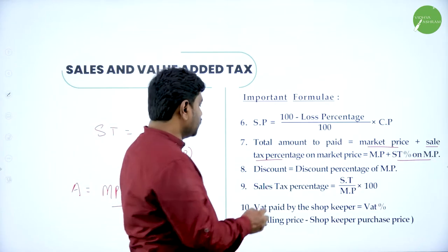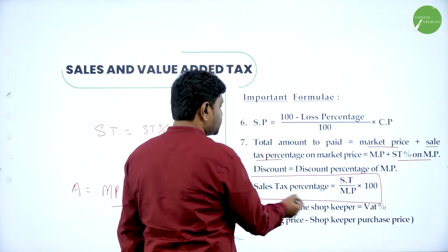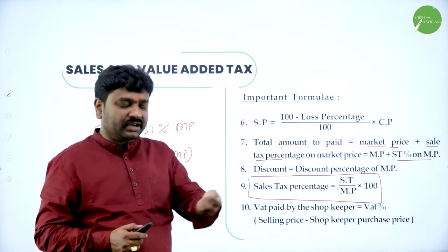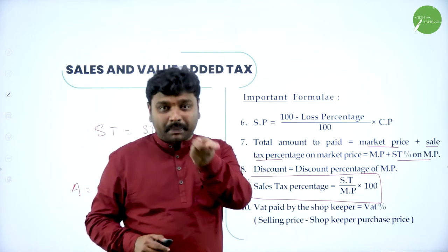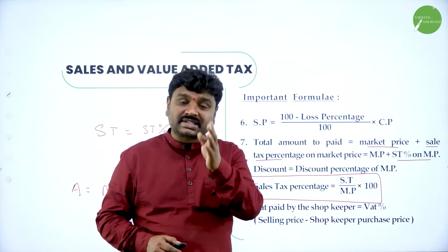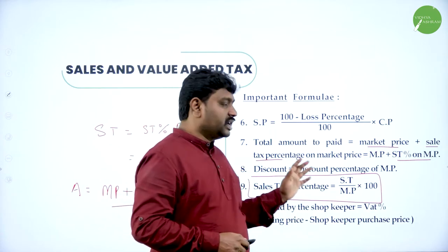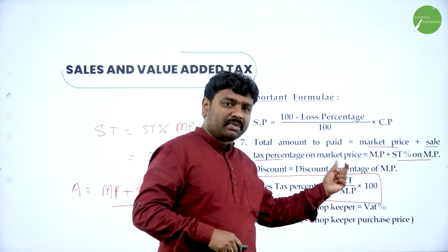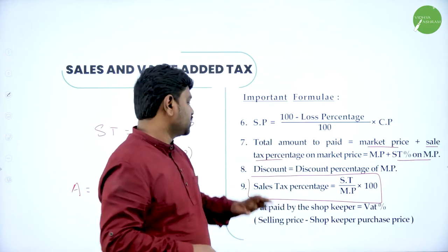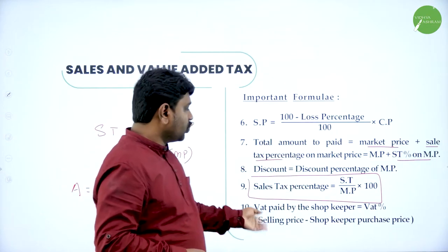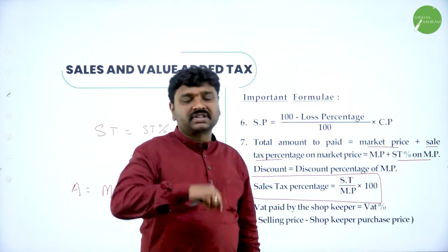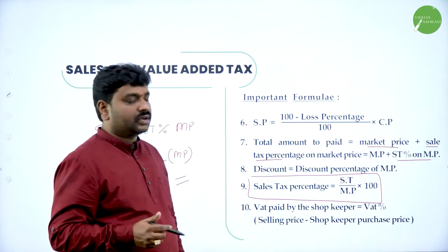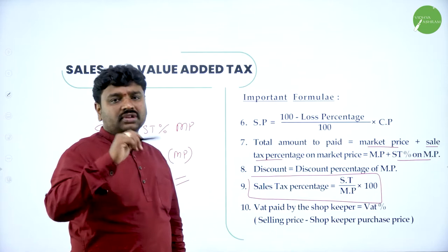To find sale tax percentage: sale tax paid divided by market price into 100. So, how much sale tax you are paying divided by market price into 100 gives sale tax percentage — because sale tax is calculated on market price. VAT paid by shopkeeper is: rate of VAT applied on (selling price minus purchase price). All these formulas we will use to solve the problems.